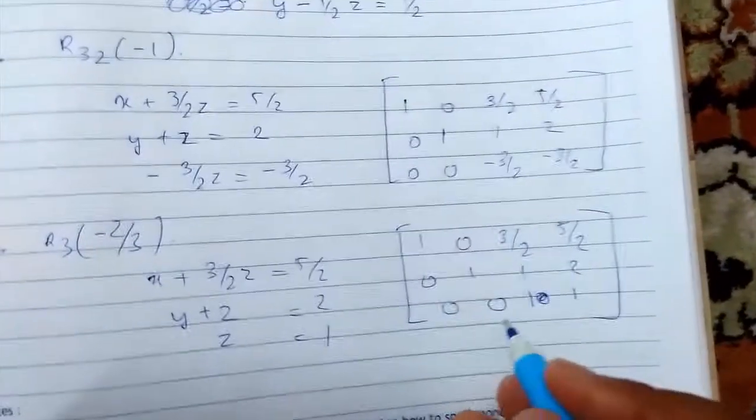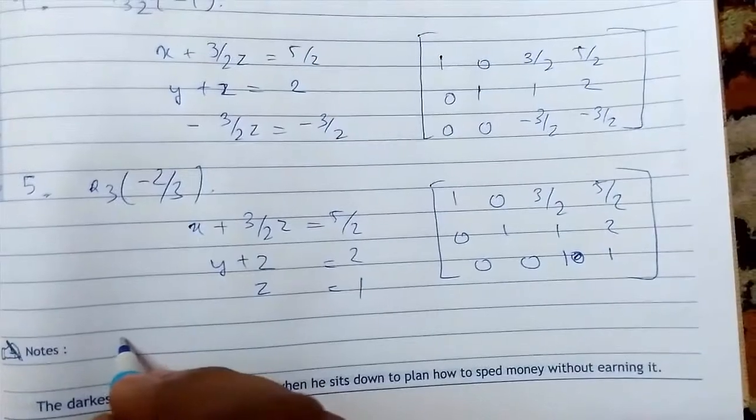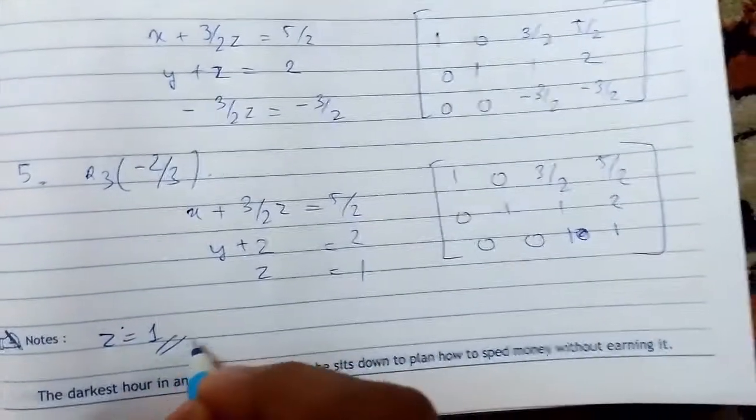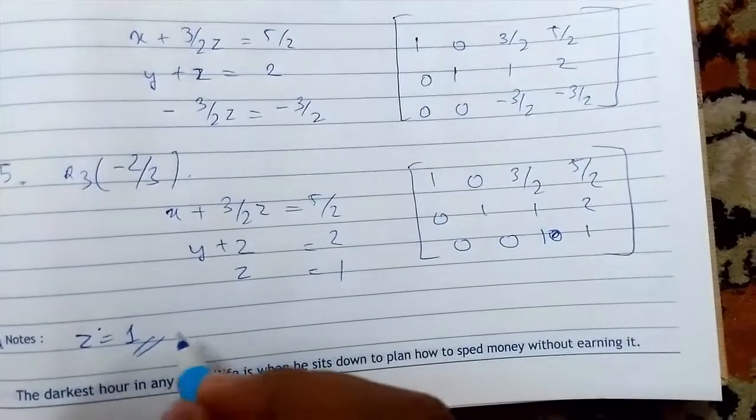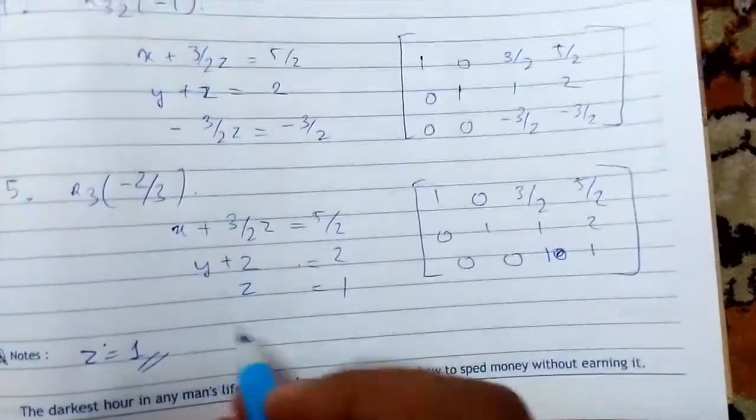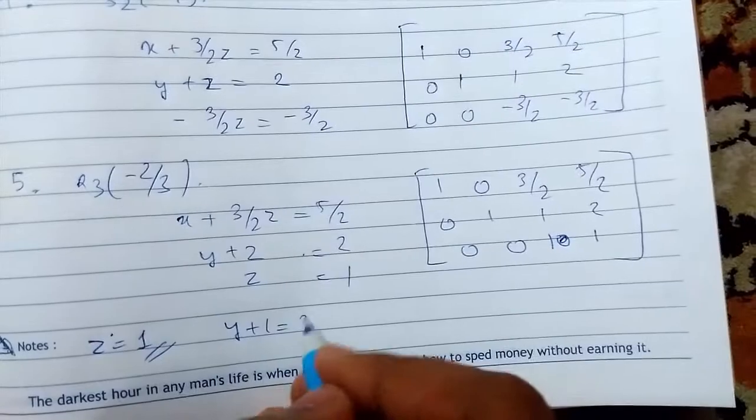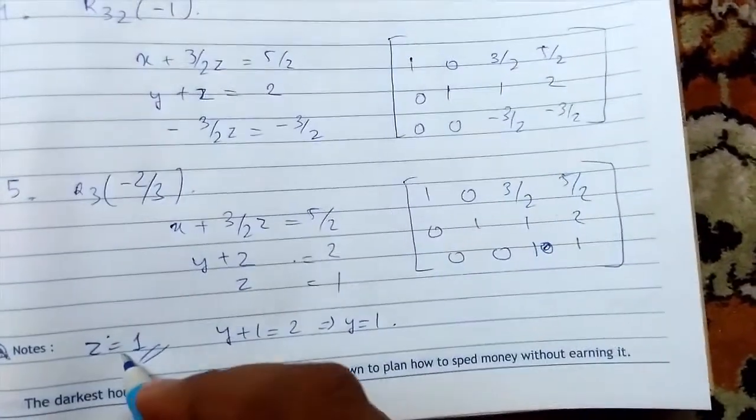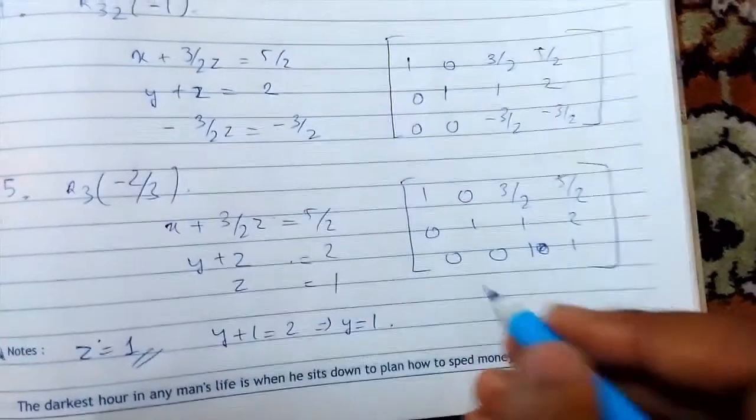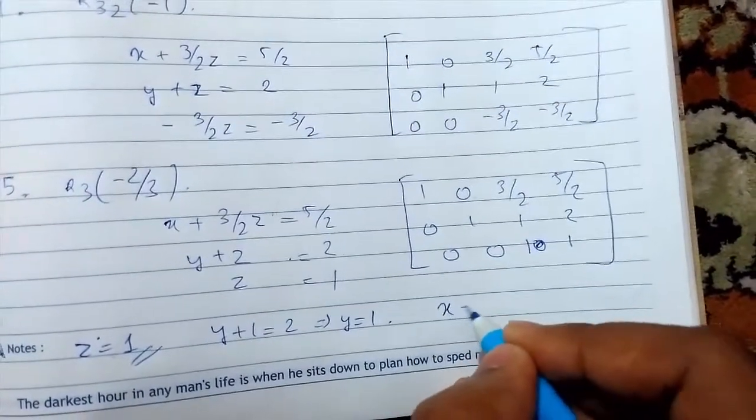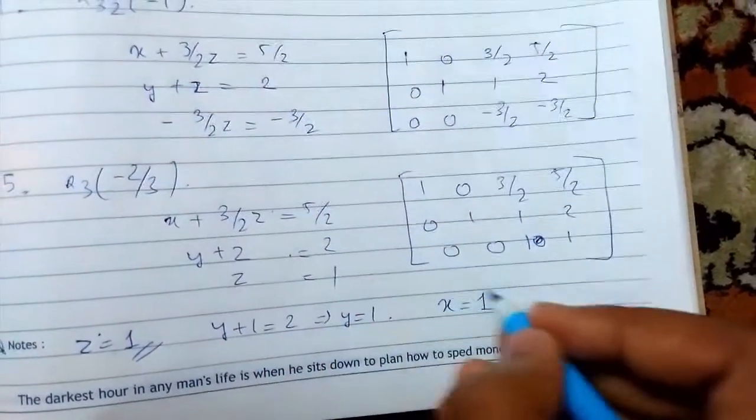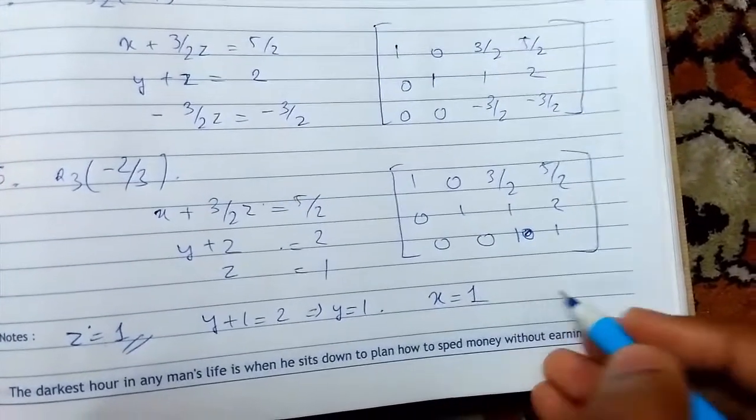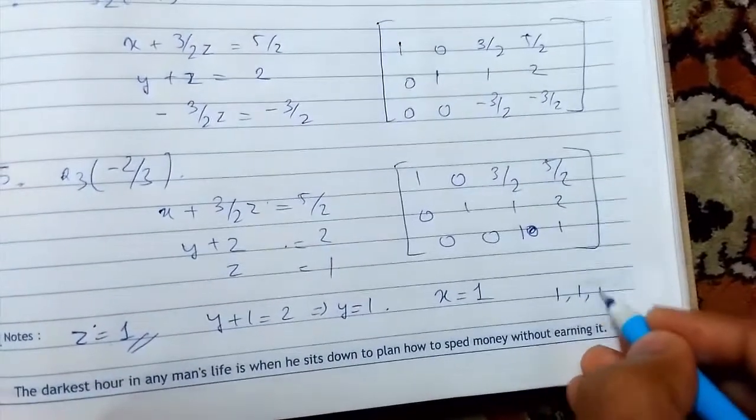We got the answer. First of all we can see that from the last equation z equals 1. That is our first answer. Now putting the value of z in equation 2, y plus 1 equals 2, so we are getting y as 1. And finally we place the value of z here, x will be 1. 5/2 minus 3/2 is 1. So the set of solutions of the equation are 1, 1, 1.